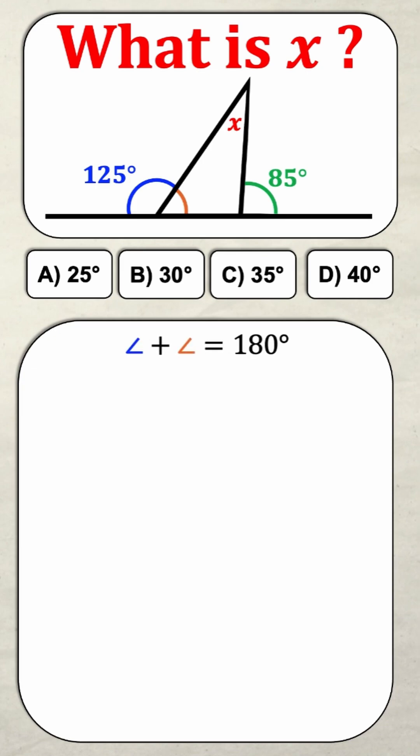We know the blue angle is 125°, so 125 degrees plus the orange angle equals 180. Therefore, we can deduce that the orange angle is 55 degrees.